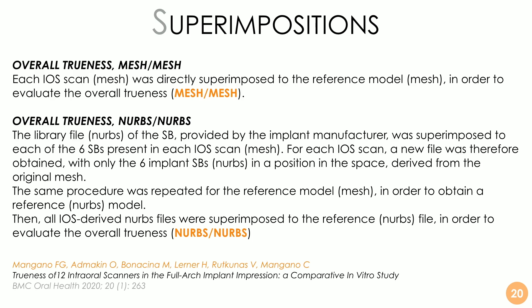With the NURBS-to-NURBS method, the library file of the scan body provided by the implant manufacturer was superimposed to each of the six scan bodies present in each iOS scan mesh. For each iOS scan, a new file was generated containing only the six implant scan body library files in their position in 3D space — derived from the original mesh. The same process was repeated for the reference mesh, and then the two were superimposed. It is essentially a different way to evaluate the overall trueness of the models.